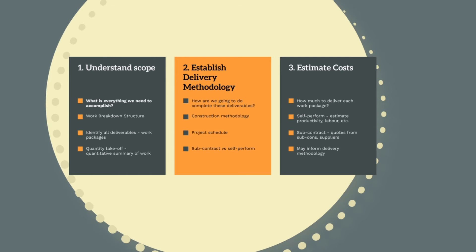And finally, in step three, now we know what has to be done and how we are planning on doing it, we can estimate costs. How much money do we need to complete each work package? For our self-performed costs, this will require us to estimate our productivities, our labour, plant and materials. When using subcontractors to complete the works, we'll need to get quotes from subcontractors and suppliers. It's worth noting that all these steps are iterative, meaning they won't exactly occur in that order and the results we get from each stage will impact the previous step.